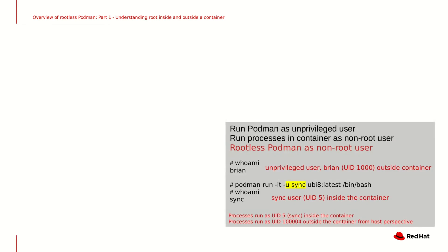When running Podman rootless as an unprivileged account, you can also run the processes within the container as a non-root account in the container. This is referred to as running rootless Podman as non-root, and from a security perspective this is the best option out of the four, because running Podman rootless from the host's point of view is one layer of defense, and running the processes within the container as a non-root user offers another level of defense. In this example, we're starting the container with Podman and telling it to run as the sync user account with the -u switch, so from the container's point of view the processes are running as the sync user with UID 5, and the user namespace has a UID map file that maps this sync UID 5 back to UID 100004 on the host.